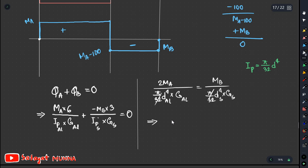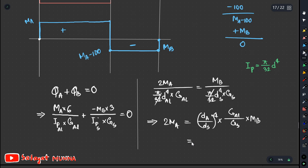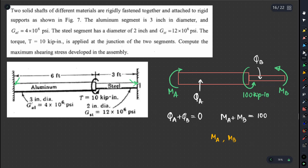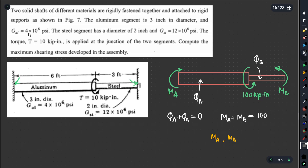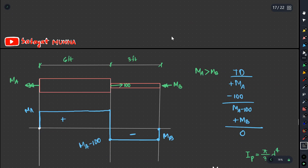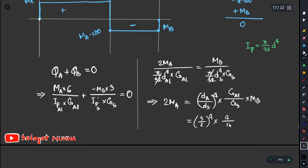Simplifying the equation: 2MA times (d_aluminum / d_steel)^4 times (G_aluminum / G_steel). The diameter ratio is 3 to 2, so (3/2)^4. The shear modulus ratio for aluminum to steel gives us 4 by 6. This allows us to reduce the compatibility equation into a solvable form.